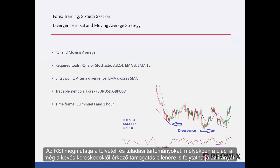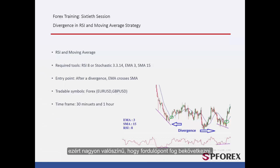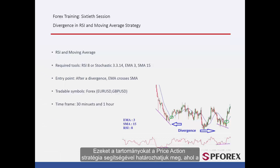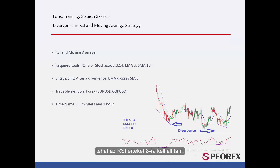RSI shows the overbought or oversold regions, in which a market price may continue its direction despite little support from traders. Thus, a reversal point is highly probable. These regions can be specified by the Price Action Strategy, in which a trader can find reversal points with sharp gradient in M30 or H1. Thus, RSI value should be set on 8.